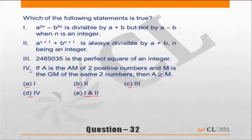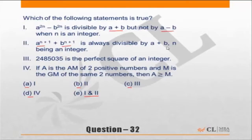Statement 1: a to the power 2n minus b to the power 2n is divisible by (a+b) but not (a−b), when n is an integer. This could be difficult. Statement 2: a to the power (n+1) plus b to the power (n+1) is always divisible by (a+b), n being an integer. This can be checked by putting values of n, but it will be a little time-consuming.